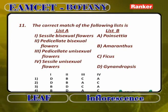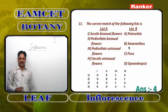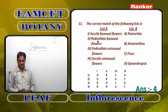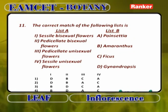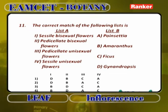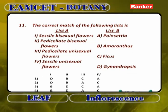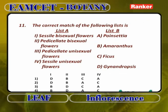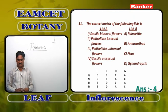Correct match of inflorescence features: sessile bisexual flowers in amaranthus — simple spike (1B). Pedicellate bisexual flowers in gynandropsis — simple corymb (2D). Pedicellate unisexual flowers in poinsettia — cyatheum (3A). Sessile unisexual flowers in ficus — hypanthodium (4C). So: poinsettia is cyatheum, amaranthus is simple spike, ficus is hypanthodium, gynandropsis is simple corymb. The correlation between types of flowers and inflorescence is discussed in this matching tabular form.